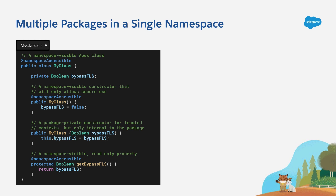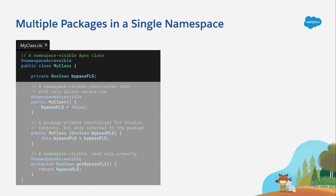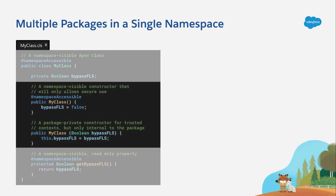Now, with 2GP, I've got a better option. By using the @namespaceAccessible annotation, I can specify that this public class, which would normally only be visible within its own package, can be accessed by Apex running in any other package that shares the same namespace. And it's not all or nothing at the class level either. I can use @namespaceAccessible to make fine-grained access control choices within the code I build. Here, I've overloaded the MyClass constructor, but have only marked the zero-argument one as being accessible within my namespace.